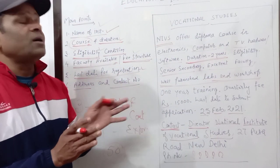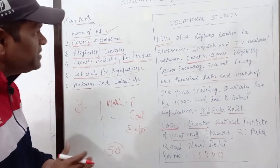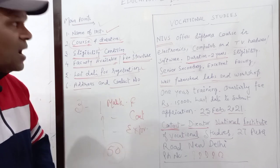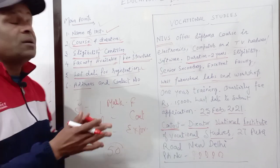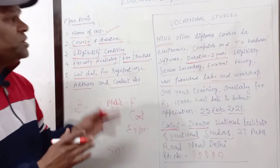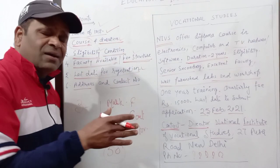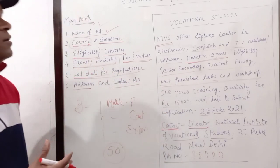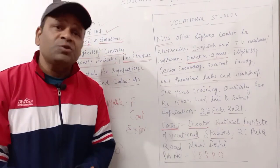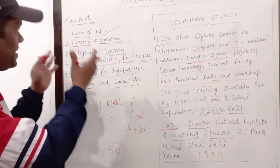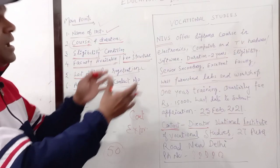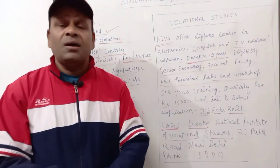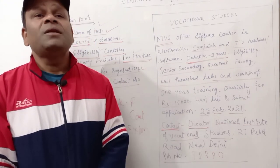While solving an advertisement question, first read the question carefully, check the type of ad being asked, and solve accordingly. You need not waste much time — try to complete the advertisement within 2 to 3 minutes. That can be done only when you are practicing at home. Please keep all these points in mind and do as many samples as you can. Hope this lesson will be helpful for you. Thank you and God bless.